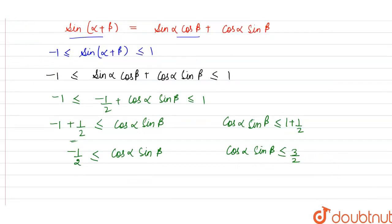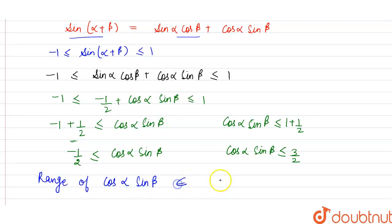So, we have to find the range. The range of cos alpha sin beta is equal to the interval minus 1 by 2 to 3 by 2, including both endpoints minus 1 by 2 and 3 by 2. That's why we are using closed brackets. This is the answer for this question.